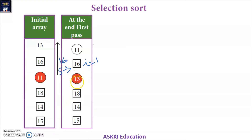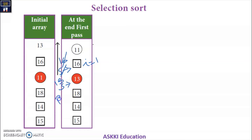S now denotes 13. We compare 13 with 18: 13 is smaller, so S remains 13. Then we compare 13 with 15: 13 is smaller, so S remains 13. The value of S is 13, and the position is 2. So 13 is the smallest element found during this pass.